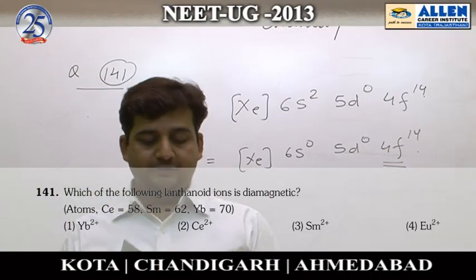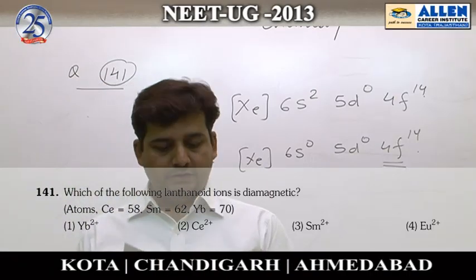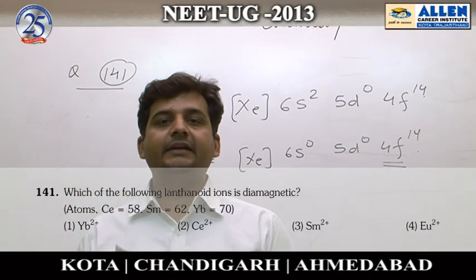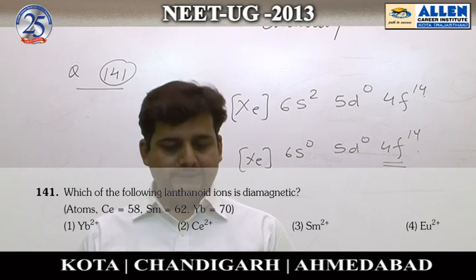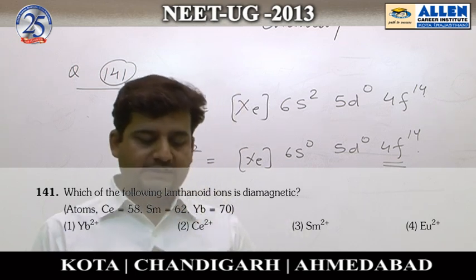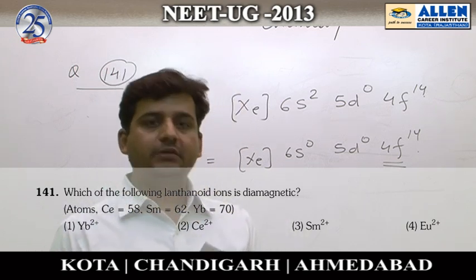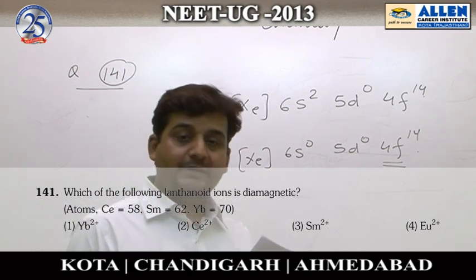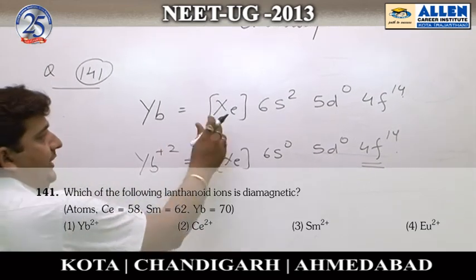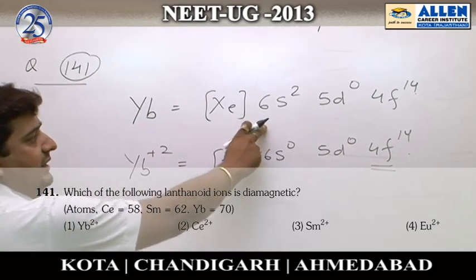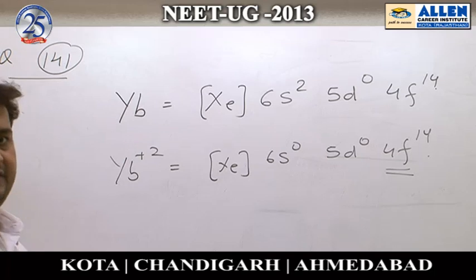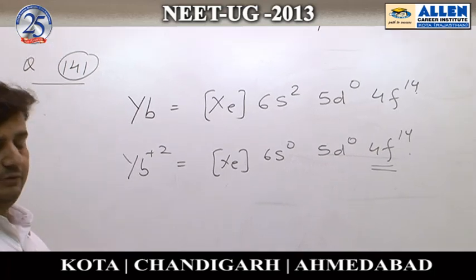Question number 141: which of the following lanthanide ion is diamagnetic? For that, first consider the first option — ytterbium (Yb). The electronic configuration of Yb is [Xe] 6s² 5d⁰ 4f¹⁴.